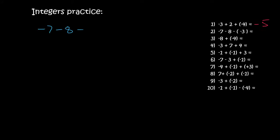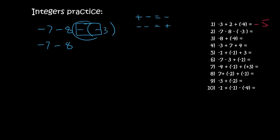So the next one — let's not rush, we take it easy, there's no rush. First get rid of all the brackets. So minus seven, minus eight. Then we've got a minus and a minus. In the previous one we had a plus and a minus, and that became a minus. Now we have a minus and a minus, which is a plus. So we're going to change that minus and that minus to a plus, and then it's plus three.